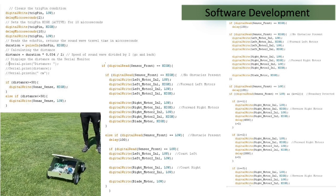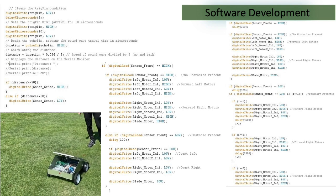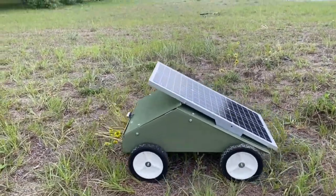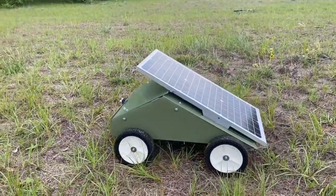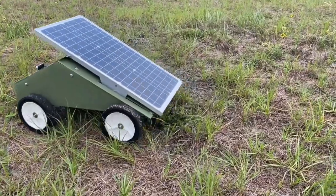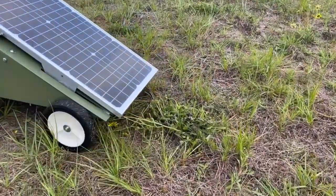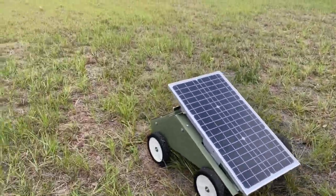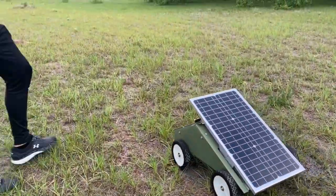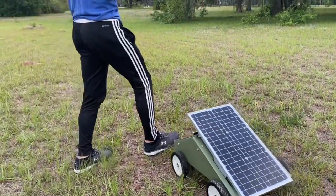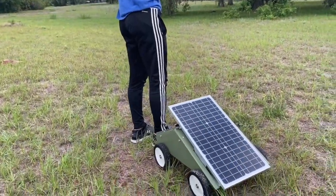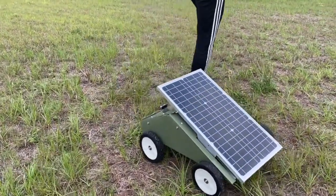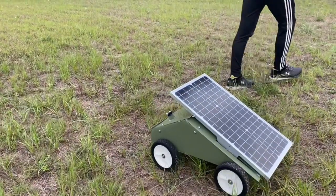We demonstrate this in the next video. The mower is cutting along grass in its normal sequence, then as an individual walks in front of it, you can hear the blade stop and the mower stop. Once they move out of the way, it continues.